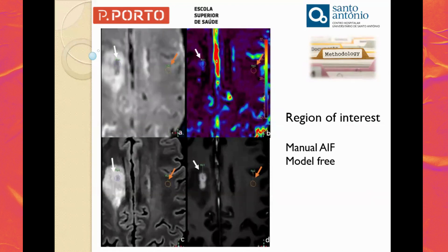Here we have images showing an example of how the ROI delineation was performed in the lesion hot spot and in the contralateral normal white matter. The different image types used to delineate the lesion and normal white matter include: perfusion images, CBV perfusion color map, T1 with contrast, and T2 FLAIR. The delineation method was always the same for progression and pseudo-progression for both models.